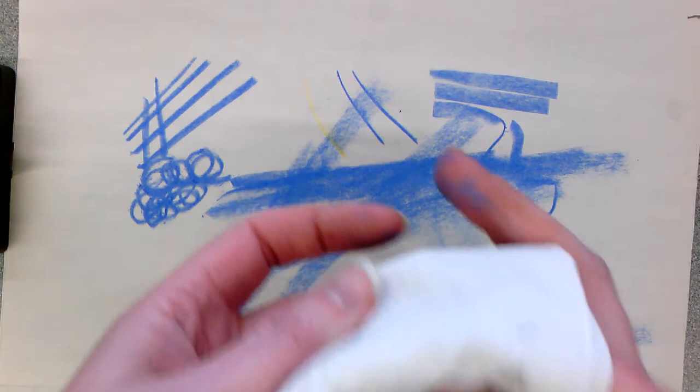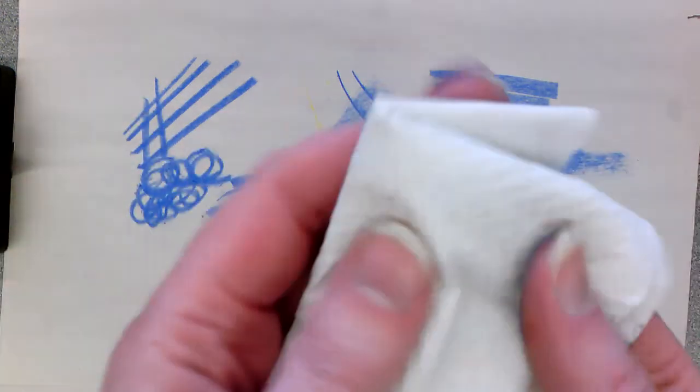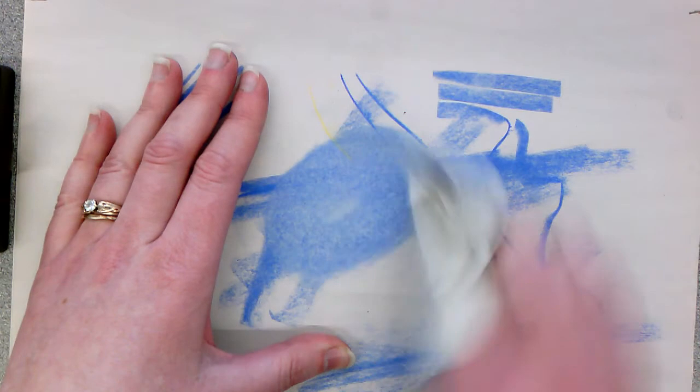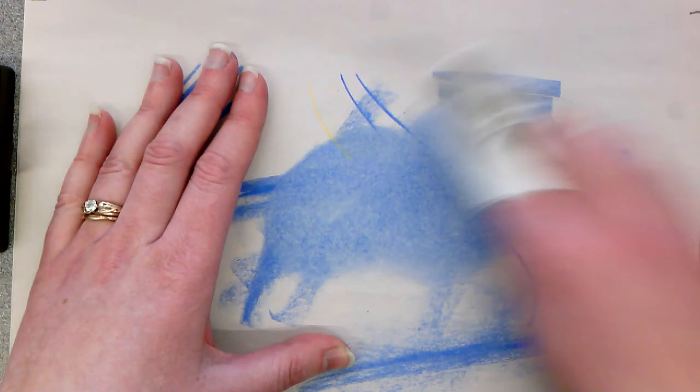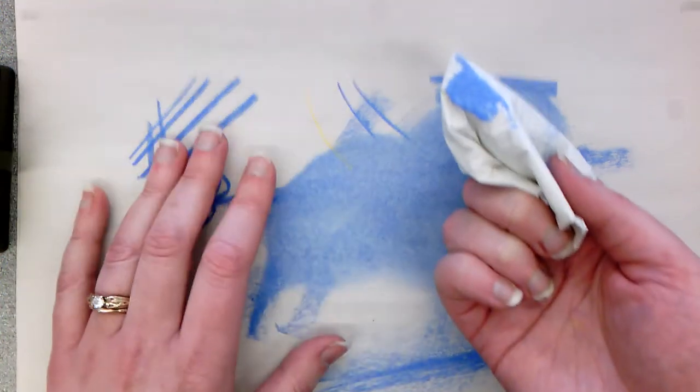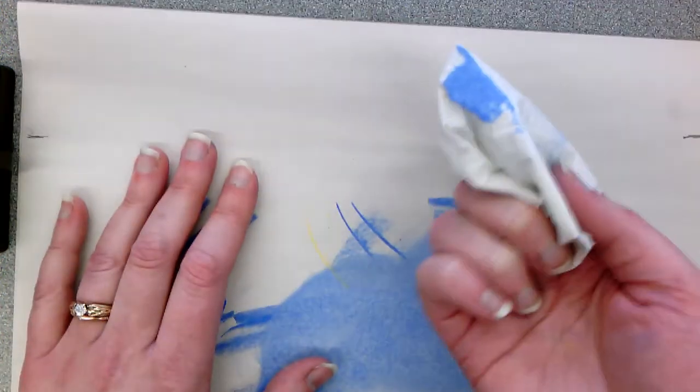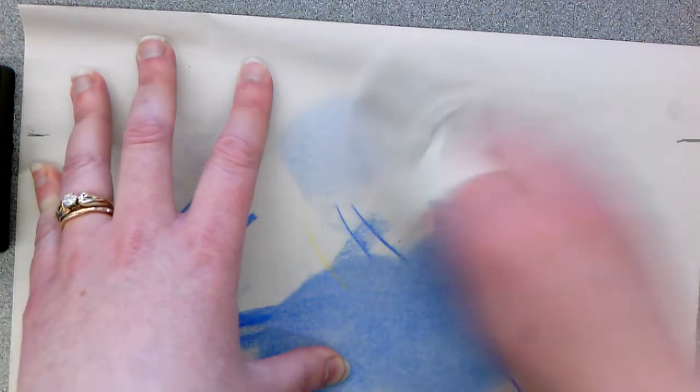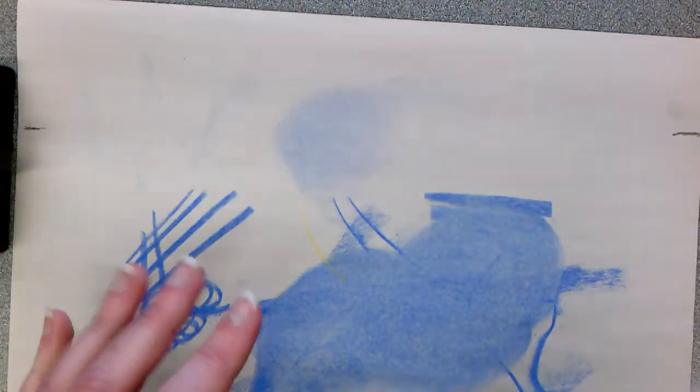You can take your paper towel, wrap it around your finger and smudge. And in that way, do you see how much I'm getting on my paper towel? I can actually take what's on my paper towel and keep coloring with it. So little waste with this.